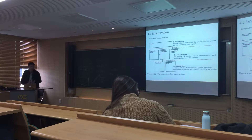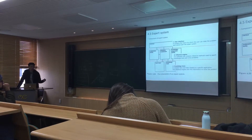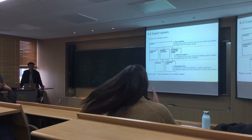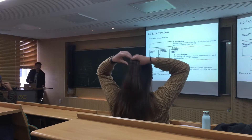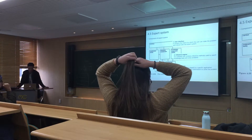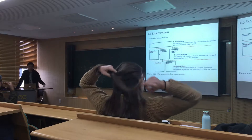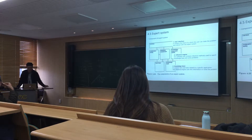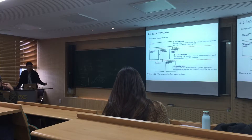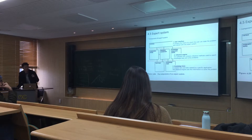Expert systems consist of three parts. The first one is the user interface. The user interface contains the means by which the user can state the problem and interact with the expert system. Most programs have a graphic user interface or a script user interface. The second one is the inference engine, which I think is the most important part. The inference engine is software made using a programming language that contains inference methods used to search the knowledge base to solve problems given by the user.